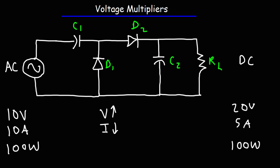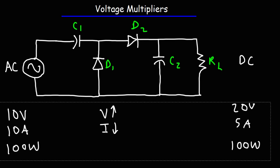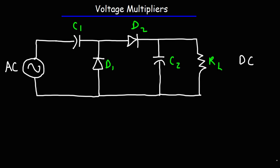Whenever a circuit increases the voltage without applying any input energy to the circuit, the current is going to decrease, because we don't have any external power sources increasing the voltage. The voltage is being increased by passive elements, not by any active element. So as the voltage goes up, the current goes down.